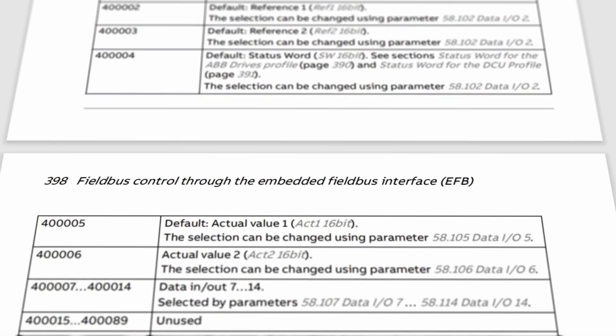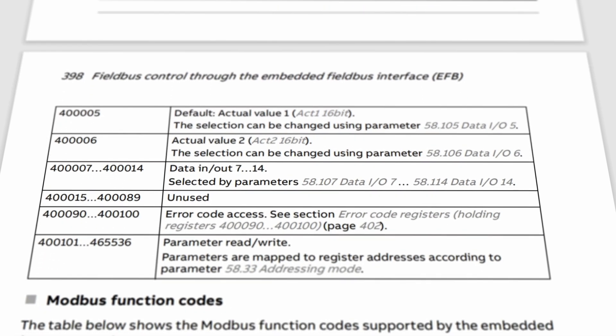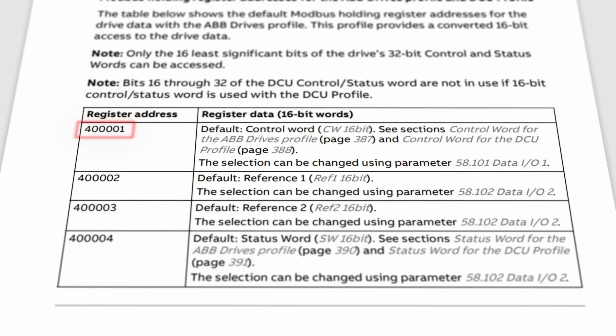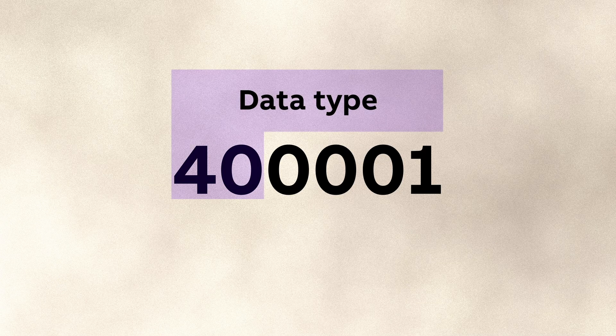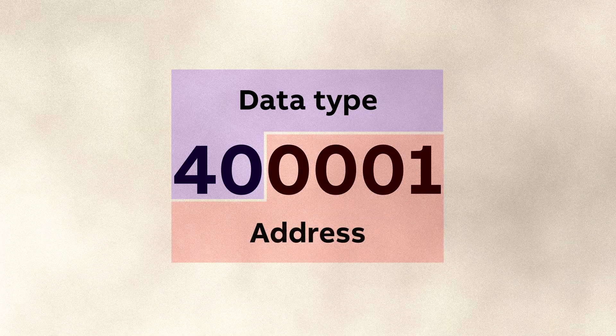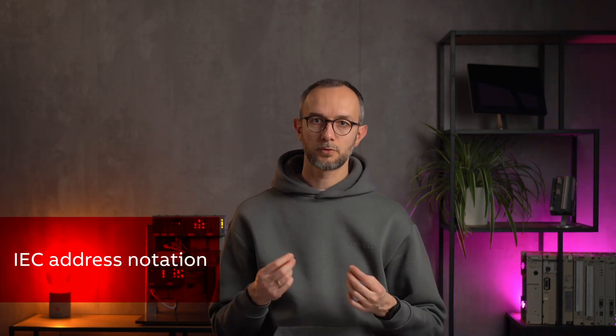One remark on Modbus address notation. While browsing through drive documentation, you will see that the register address is shown in a different way. For example, data IO1 has address 400001 — this is so-called Modicon notation. Technically it is outdated, but many vendors still use it because it incorporates both the data type (4 stands for holding register) and the address. To get the IEC address that the PLC operates with, you need to remove the 400001 part, which leaves us with address 0.